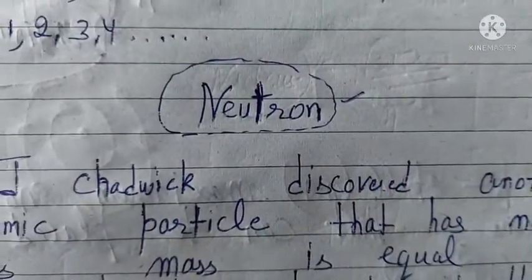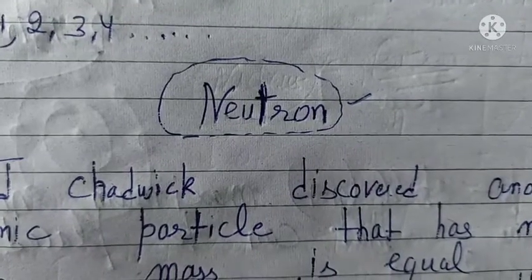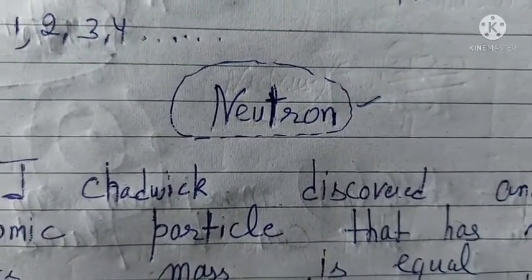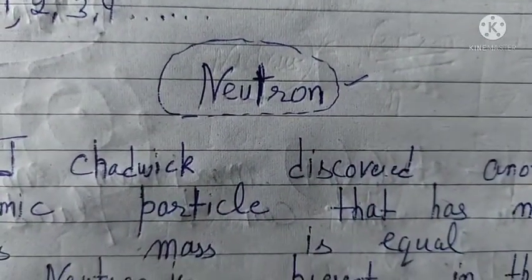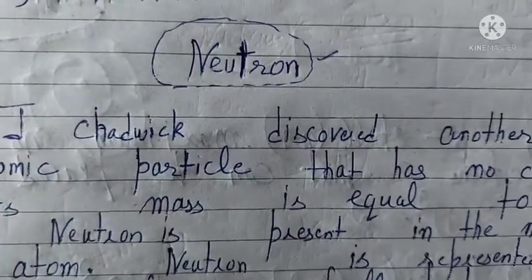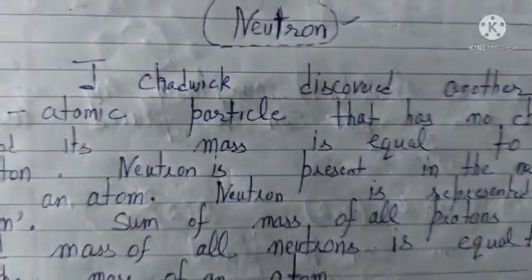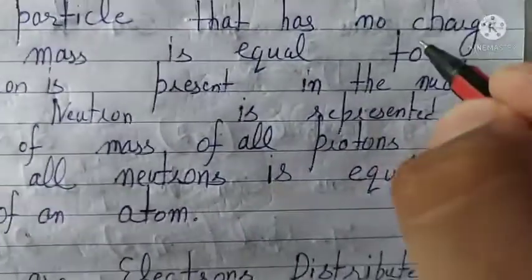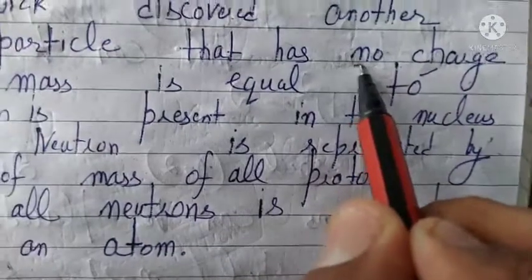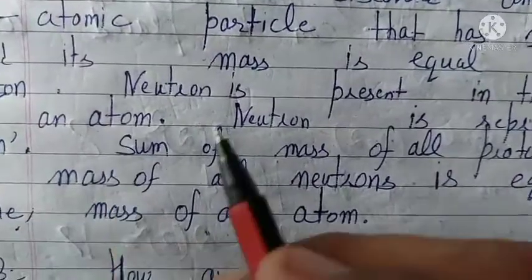The next topic is Neutron. There was a scientist whose name is J. Chadwick. He said that apart from electrons and protons present in an atom, another subatomic particle whose name is Neutron is also present in the atom. The neutron has no charge on it, but its mass is approximately equal to the mass of the proton. Charge is zero — remember this point. Neutron has no charge, but its mass is nearly equal to the mass of the proton.